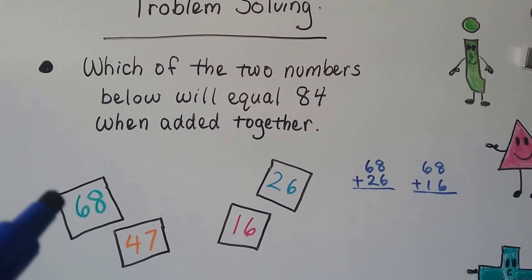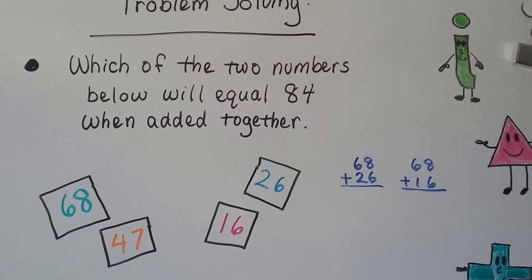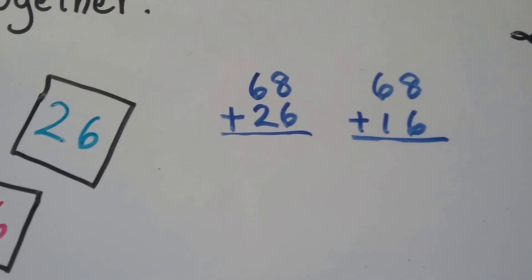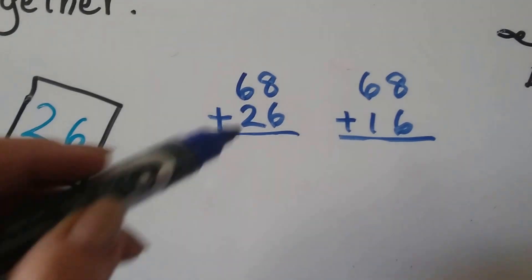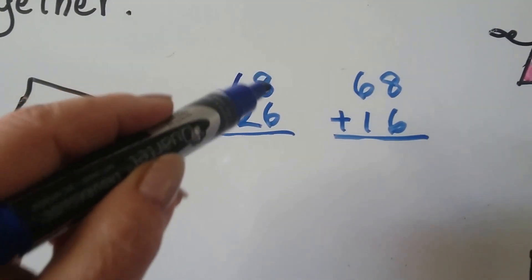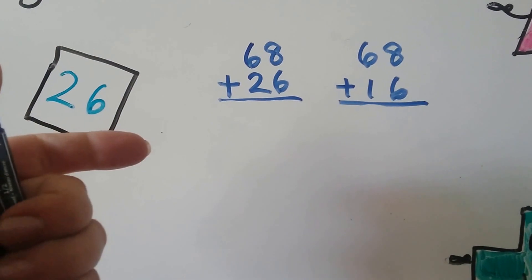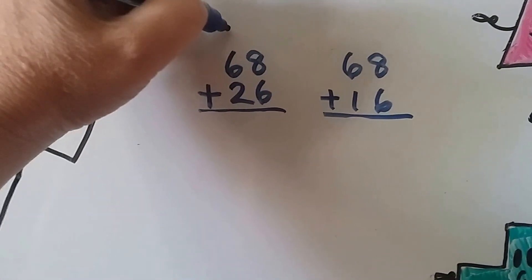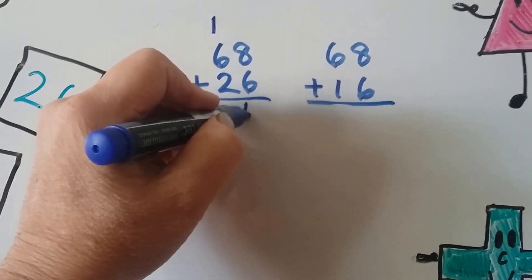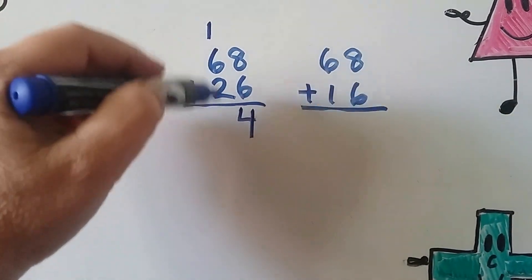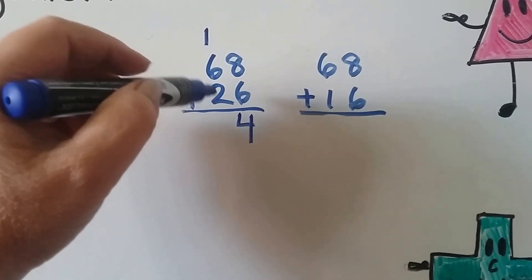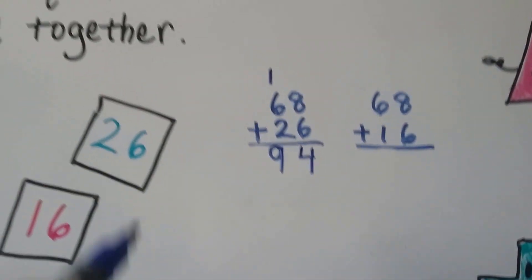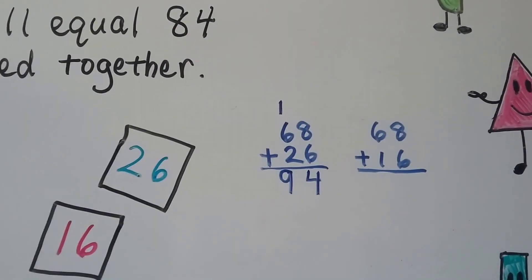So we can try the 68 and the 26. 68 plus 26 — we start in the ones place. 8 plus 6: 8, 9, 10, 11, 12, 13, 14. We regroup the 1 and put the 4 down. Now we add the tens place: 6, 7, 8, 9. We have 9 tens and 4 ones. When we need 84, that's too big.